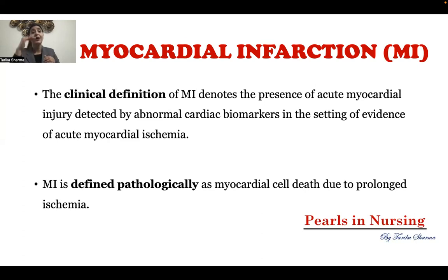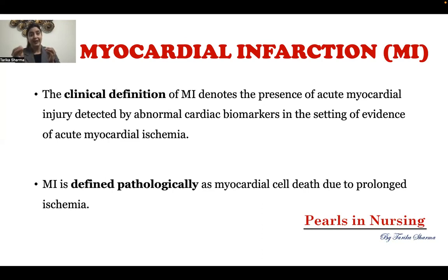And what is infarction? Infarction is one step ahead of myocardial ischemia. Because the tissues are not getting proper oxygen, they will start to die. So in myocardial infarction, the myocardium — the cells in the myocardium — will start to die because of decreased blood supply, leading to cell necrosis and cell death. MI can be defined clinically and also pathologically.